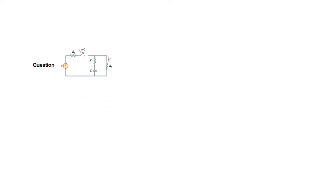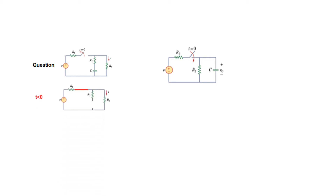Let's look at two circuits. We don't know whether they are source-free or step response circuits. The first switch says 'open at t = 0,' meaning before t = 0 it is closed. The second switch says 'close at t = 0,' meaning before t = 0 it is open. So before t = 0, the first circuit is closed and the second is open.